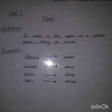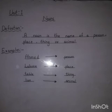Noun is the name of a person — kisih bhi shakts ka naam. Name of a place — kisihi bhi jaga ka naam. Name of a thing — kisihi bhi chiz ka naam. And name of an animal — kisihi bhi animal ka naam.